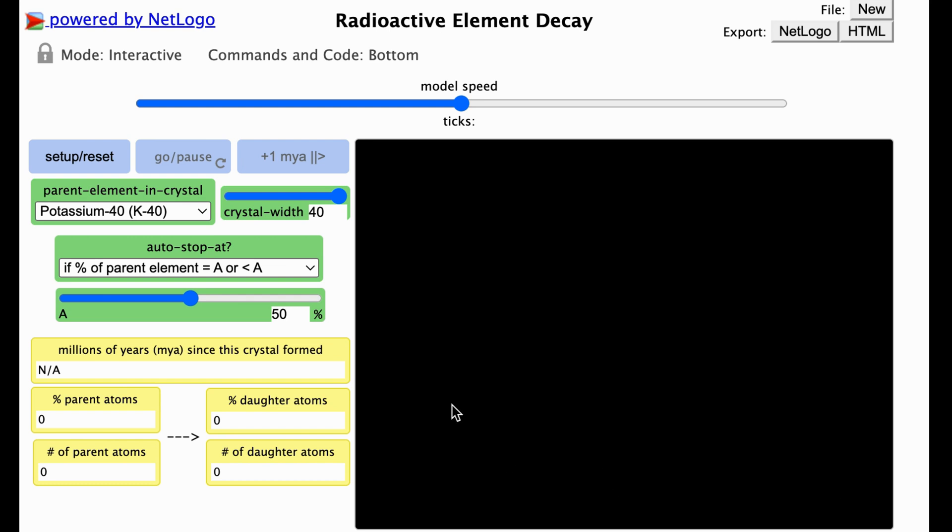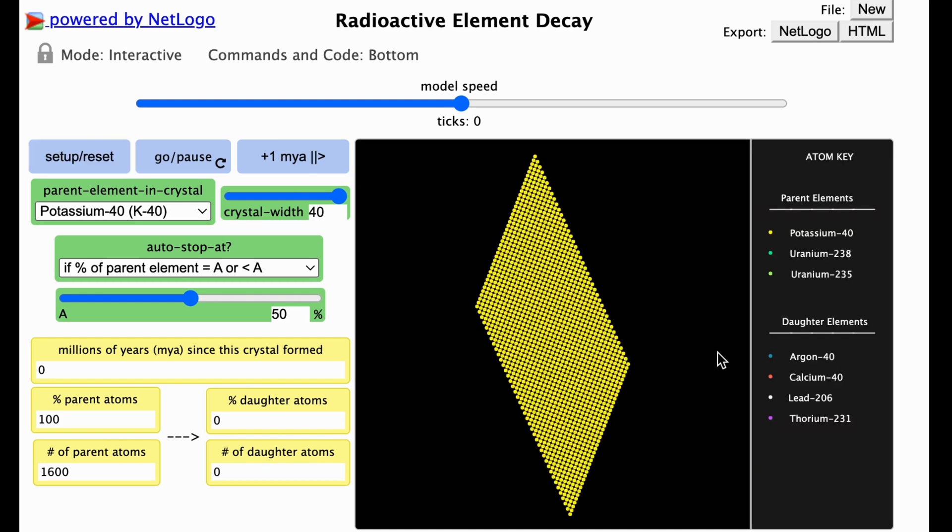You'll need to initialize the model before running it by pressing this Setup Reset button. When you do so, a diamond shape will appear representing a very small crystal found in a rock. Each dot represents a single atom of the type indicated by this drop-down menu.